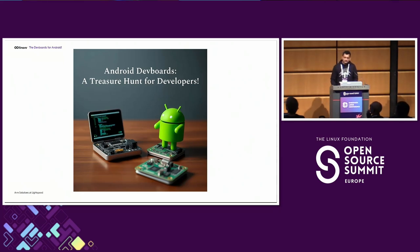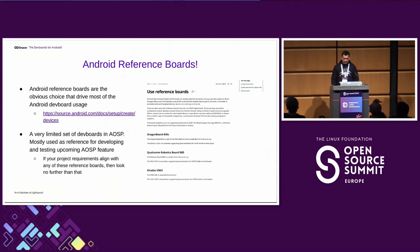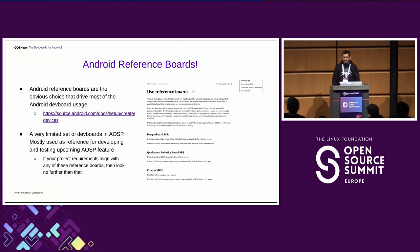So that brings us to an important question: where do we find a development device which can run AOSP reliably without much dependency on vendors, and with an easier, well-defined software upgrade path? The Android reference board is the answer for many. If you are working on Android or AOSP, you must have seen this page already. Going with the upstream reference board is the obvious choice that drives most Android dev board adoption. These hardware platforms are used as a reference for development and testing of the latest AOSP features, and also provide a starting point for device manufacturers to build their own devices. If your project requirements align with any of these devices, then just go with the supported upstream Android reference board.